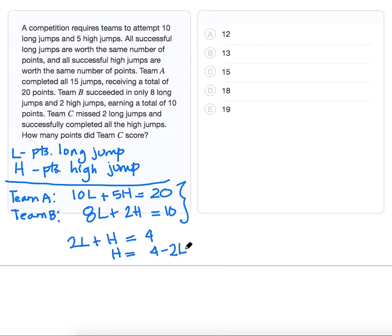Now we can substitute this expression in for H into the second equation. Using the second equation, we're going to write 8L plus 2 times 4 minus 2L has to equal 10. And we're just going to do some simple algebra to simplify this.